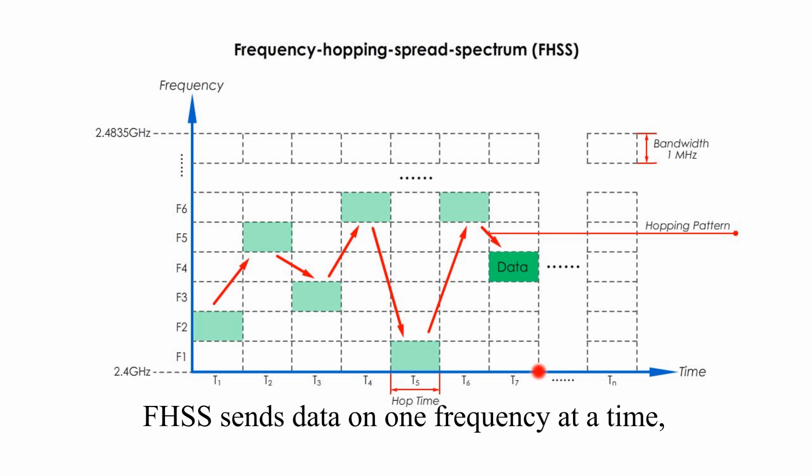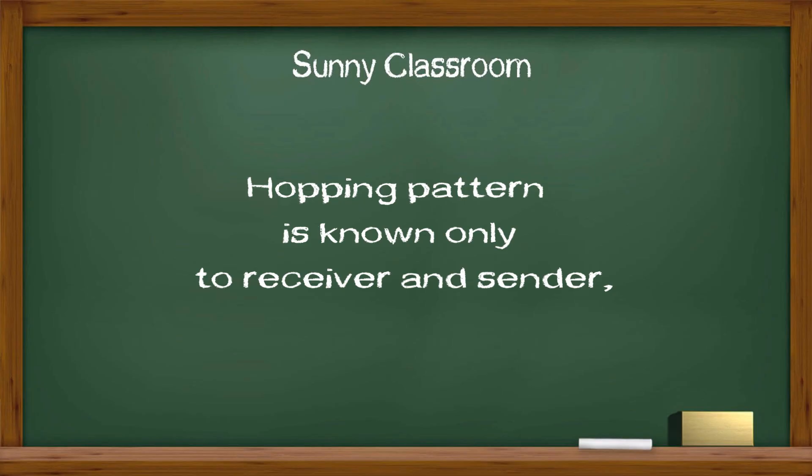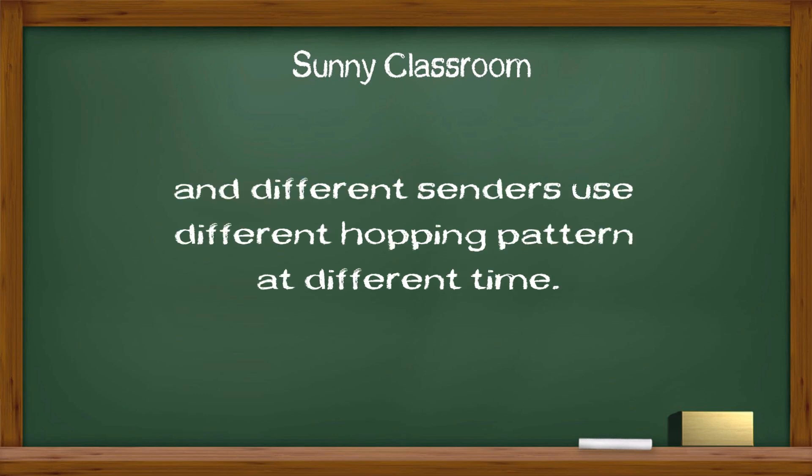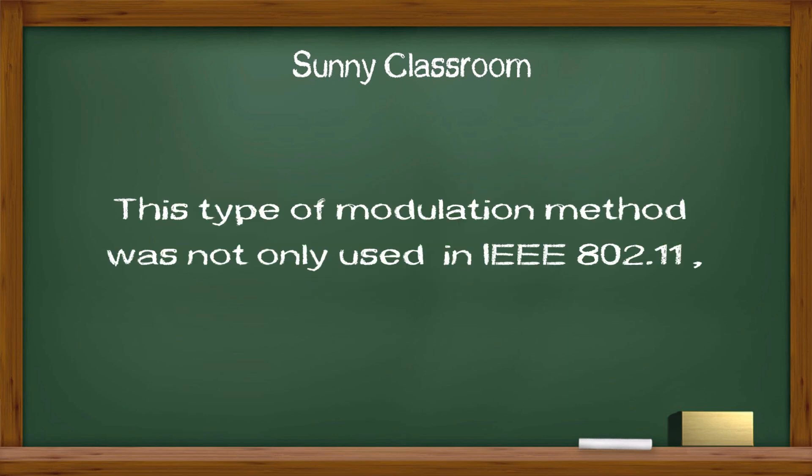FHSS sends data on one frequency at a time, and uses different frequencies over time. Hopping pattern is known only to receiver and sender, and different senders use different hopping patterns at different times.